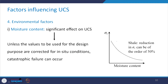Some environmental factors are very, very important. The first one is moisture content, which has a significant effect on UCS. For shale, with increase in moisture content, the reduction in UCS can be of the order of 50 percent. It will depend upon what type of rock it is, but for some rocks the effect can be as significant as 50 percent. Unless the values used for design purposes are corrected for the in-situ conditions, catastrophic failure can occur.